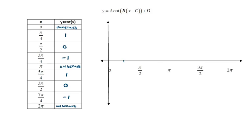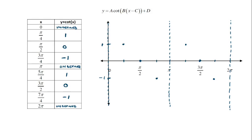Plotting these points, cotangent is going to look a lot like tangent — you'd be right to think that. There are a couple of slight differences in where the function is undefined and the location of values, but they look pretty similar. The undefined values give vertical asymptotes, but instead of being at pi over two and three pi over two, these vertical asymptotes are at zero, pi, and two pi. Cotangent has a similar shape with vertical asymptotes in slightly different places.